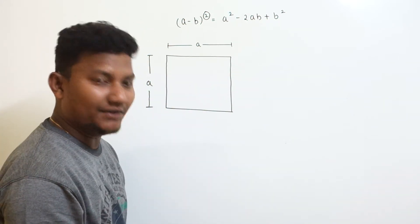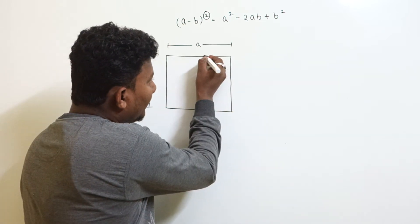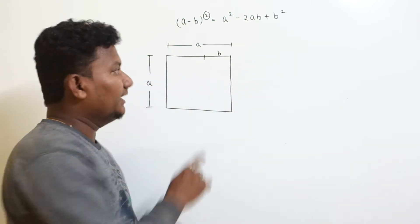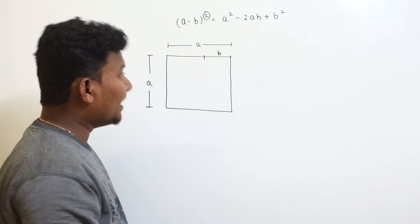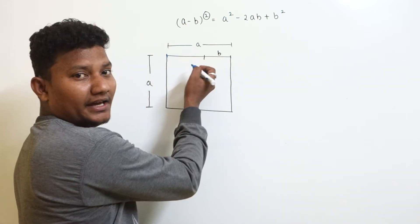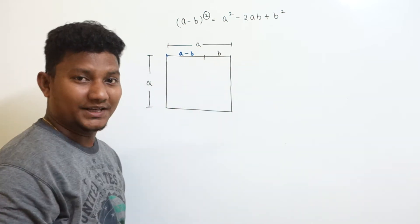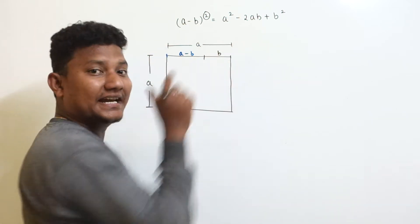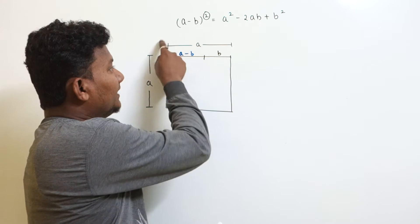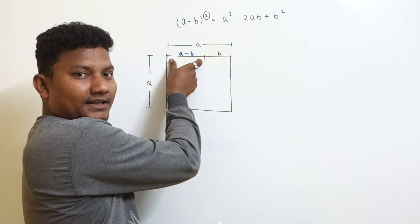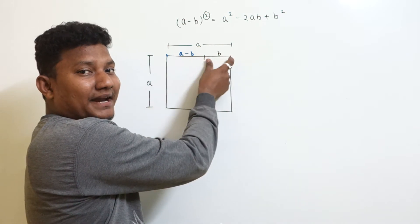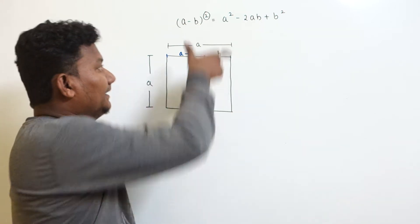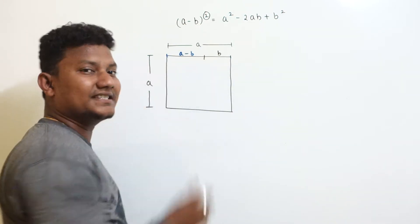Now let's mark a distance from here to here as 'b', and another distance from here to here as 'b'. So the remaining distance from here to here will be a minus b. For example, if the total distance is 10 and we mark off 3, the remaining length is 10 minus 3, which is 7. Same concept applies here: this distance is 'a' and this is 'b', so the remaining distance is a minus b.